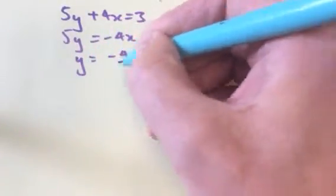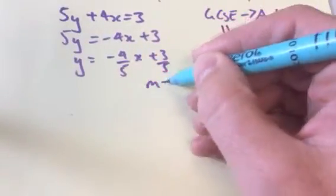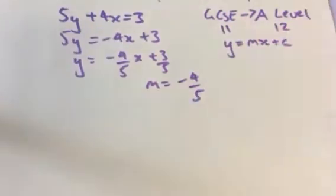y equal to minus 4 over 5x plus 3 over 5. So our gradient, m, is minus 4 fifths.